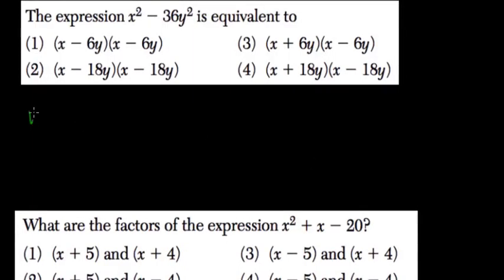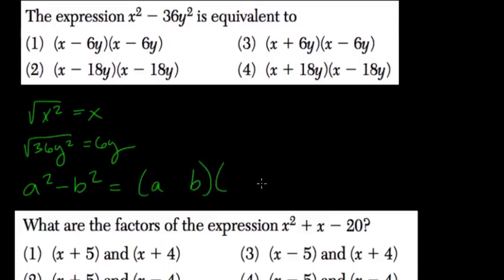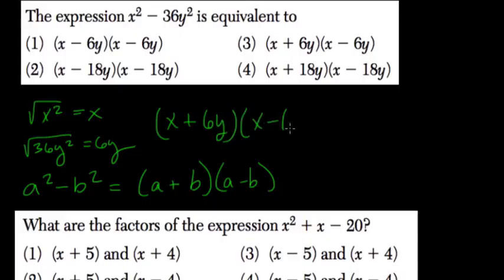This is a difference of two squares problem because we have the square root of x squared which is x, and the square root of 36y squared which is 6y. With the difference of two squares, a squared minus b squared, we find the square roots of each and then add them and subtract them. So here we add our square roots and put them in parentheses and multiply by the difference of our square roots, and that's choice number three.